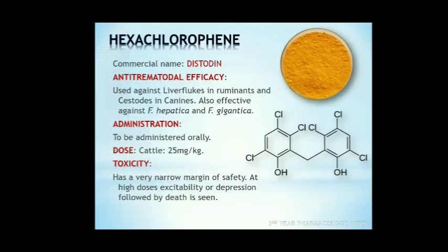Hexachlorophene. It is commercially available as Dystodine. It is an effective anthelmintic used in the treatment of liver flukes in ruminants and cestodes in canines. It is highly effective against adult Fasciola hepatica and Fasciola gigantica in cattle and sheep. Administered orally at 25 mg/kg for cattle. It has a very narrow margin of safety; at high doses, excitability or depression followed by death can occur.